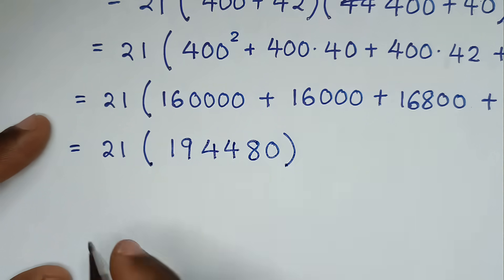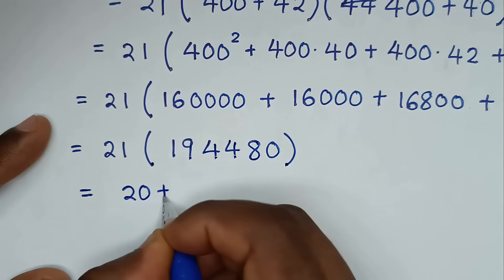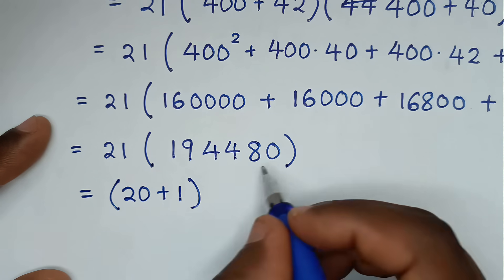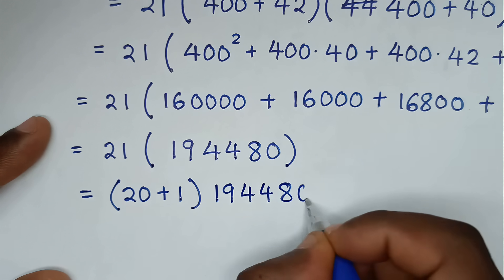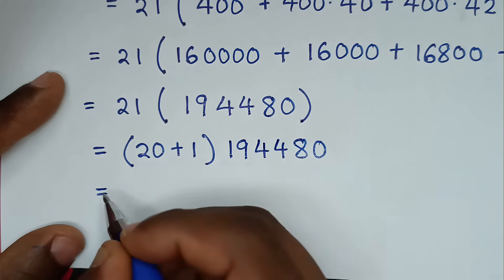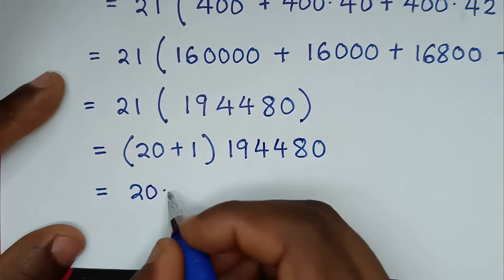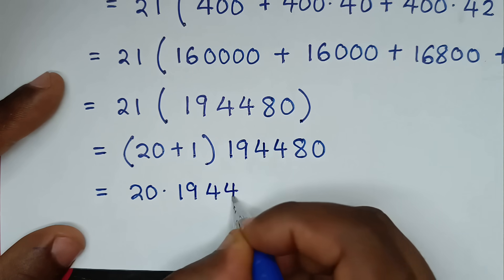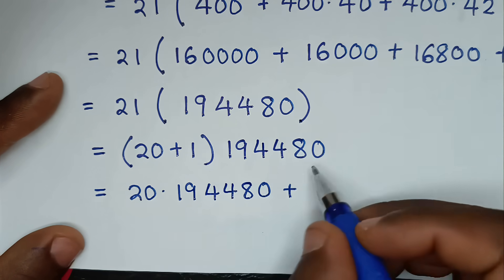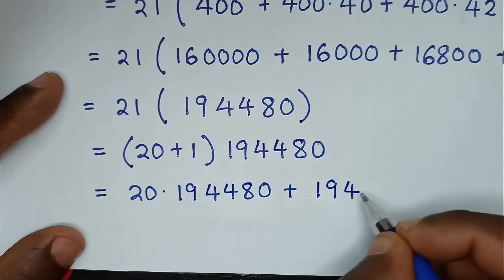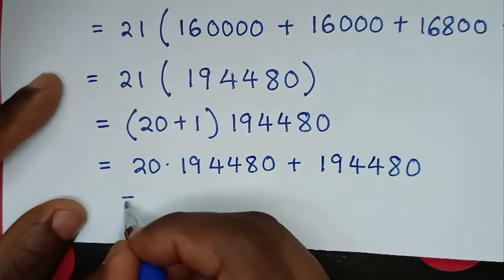It will be equal to 21 times 194,480. We write 21 as 20 plus 1, then multiply: 20 times 194,480 plus 1 times 194,480. So 20 times 194,480 gives us 3,889,600, plus 194,480.